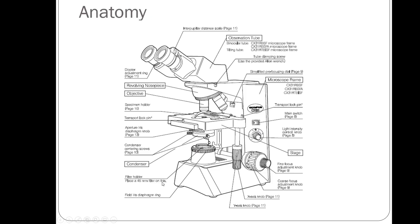Starting with the anatomy of the microscope: at the top where you look through, these lenses are called the ocular lenses. They have a magnification of 10 times, so just by looking through them you get a 10x magnification. Then we have the observation tube area, sometimes called the neck, and the base at the bottom. The other lenses are called objective lenses, and most microscopes have four of them.